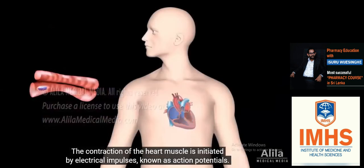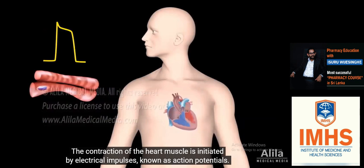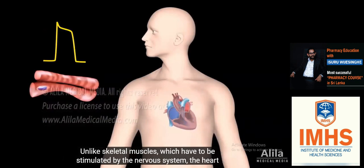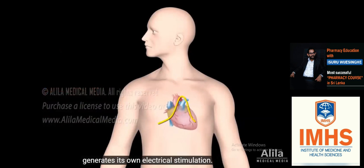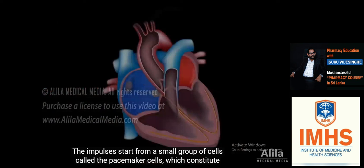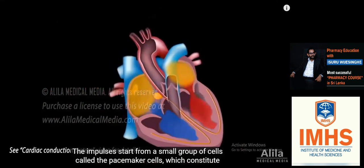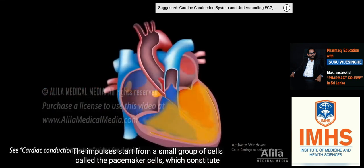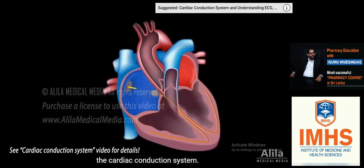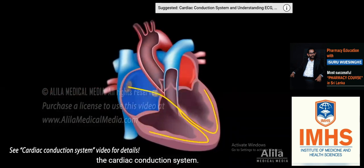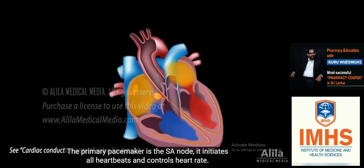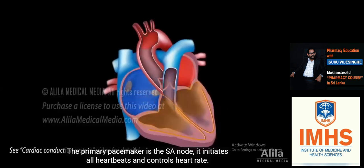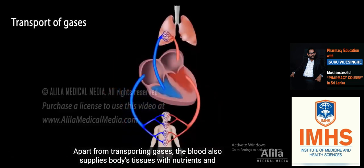The contraction of the heart muscle is initiated by electrical impulses known as action potentials. Unlike skeletal muscles, which have to be stimulated by the nervous system, the heart generates its own electrical stimulation. The impulses start from a small group of cells called the pacemaker cells, which constitute the cardiac conduction system. The primary pacemaker is the SA node, which initiates all heartbeats and controls heart rate.